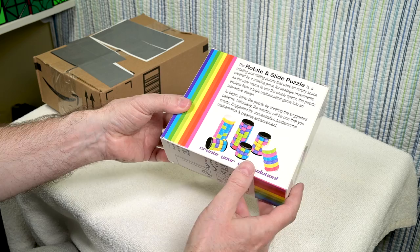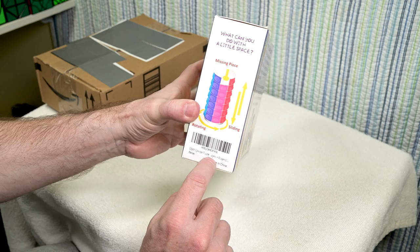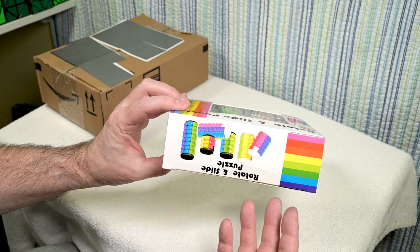So that's how this other puzzle came to be part of this. Anyway, here we go. Rotate and slide puzzle. I don't even know who this is by. Okay. So it's made in China, they've put a label over it, so I can't really see. What can you do with a little space? So it looks a little bit like a magic square puzzle.